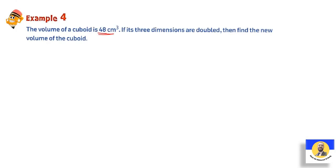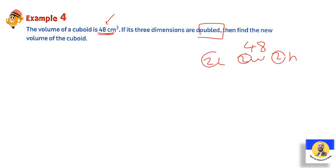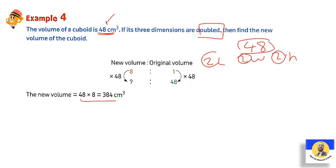Example: if the volume of a cuboid is 48, and its three dimensions are all doubled — length, width, and height each doubled — then 2×2×2=8. So take 48 and multiply by 8 to get the new volume. So: if 1 dimension is doubled → multiply volume by 2; if 2 dimensions → multiply by 4; if 3 dimensions → multiply by 8.